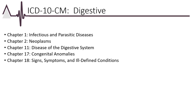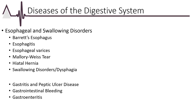Diagnosis codes related to the digestive system are found throughout ICD-10-CM. The codes from Chapter 11 do not have any chapter-specific guidelines — most are straightforward. Examples include esophagitis, which is inflammation of the esophagus; esophageal varices, which are enlarged veins in the esophagus; and hiatal hernia, which occurs when the upper portion of the stomach bulges through the diaphragm.